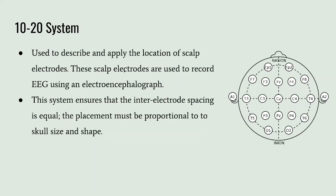The 10-20 system is a way of recording EEG data appropriately. Data is collected by placing electrodes on the scalp, and the 10-20 system describes where to place these electrodes. It ensures that the inner electrode spacing is equal and that placement is proportional to the skull size and shape. Each electrode location is labeled with a letter or letter-number combination, and these specific channels are used to collect our data.